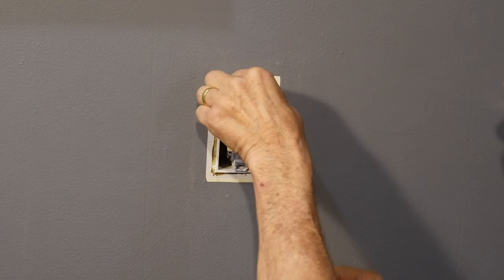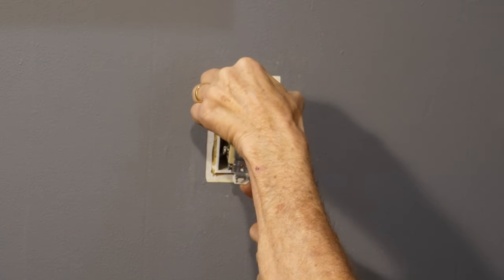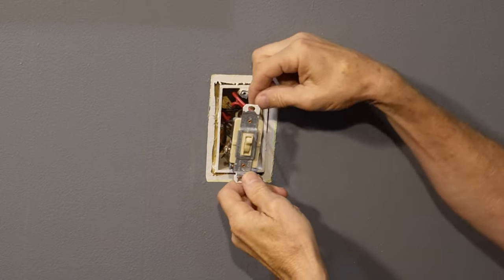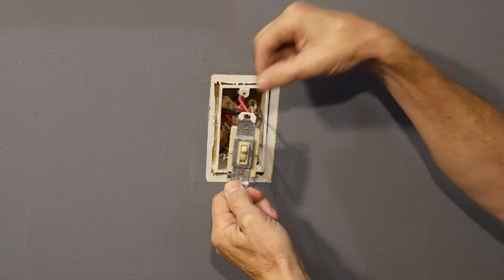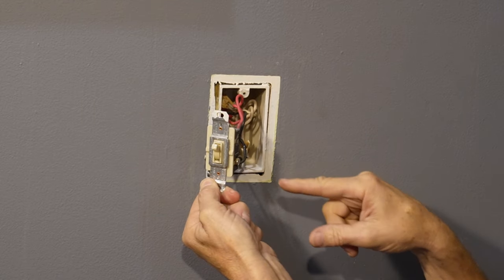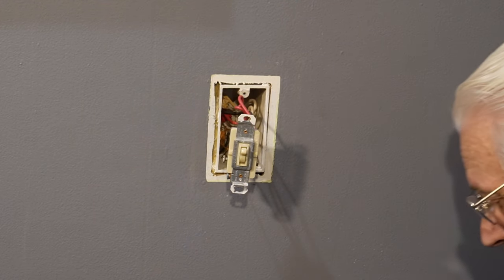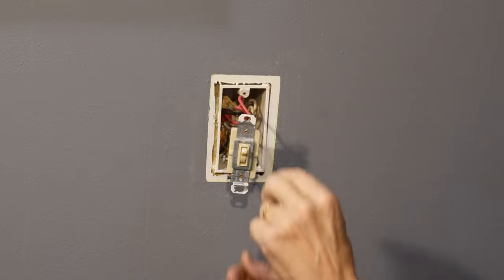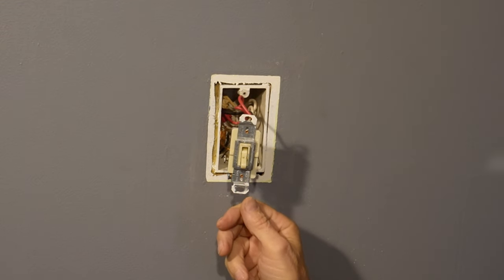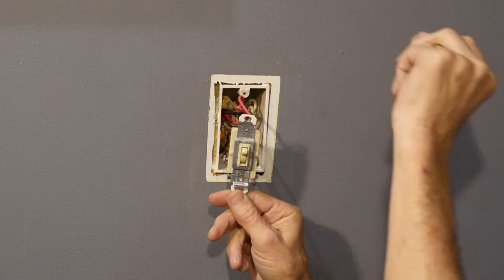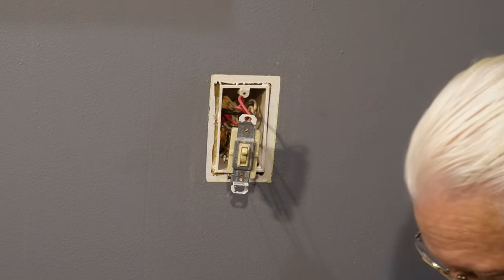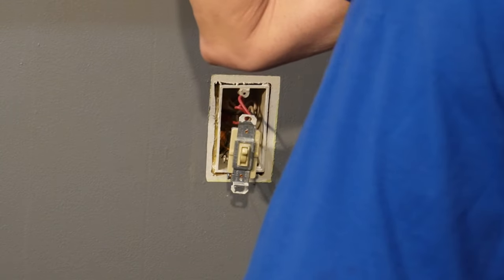Now, carefully, because the power is still on, pull this out and you can see right here, two screw connections and a ground. So now it's time to turn the power off. Can I just turn off the switch? No. Let's go turn off the breaker. Now we know when I get the right breaker because that light will go out.